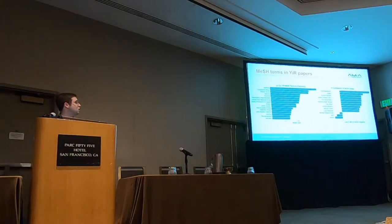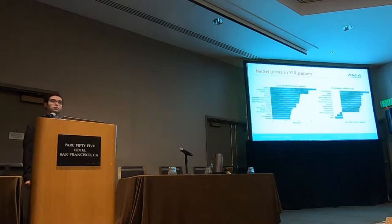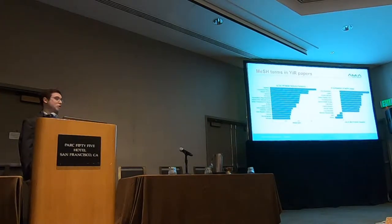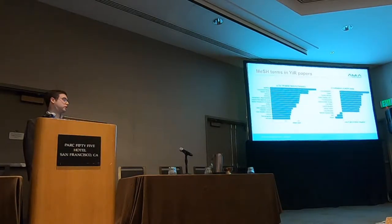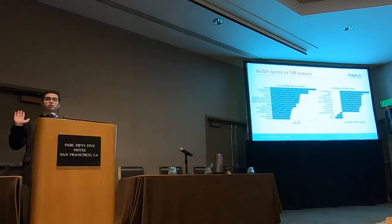Particularly interesting are the bottom three bars, corresponding to molecular sequence data, mice, and animals. These terms were substantially depleted in Year-in-Review articles compared to articles from the same journals. This partially validates our approach because mice and animals were intentionally excluded from the Year-in-Review documents — Dr. Altman and the curators would ignore papers that did not describe human experiments.